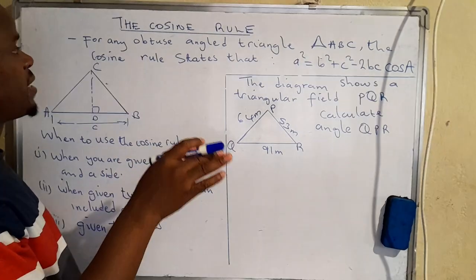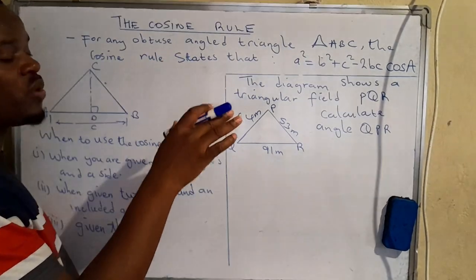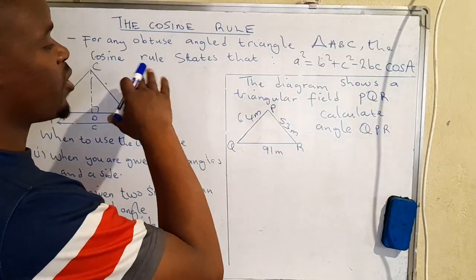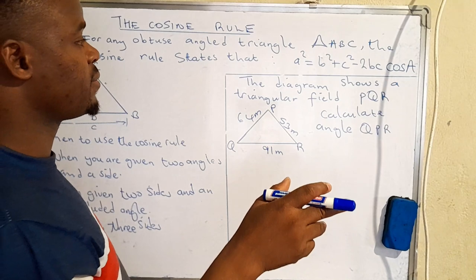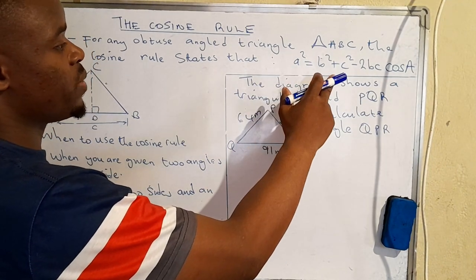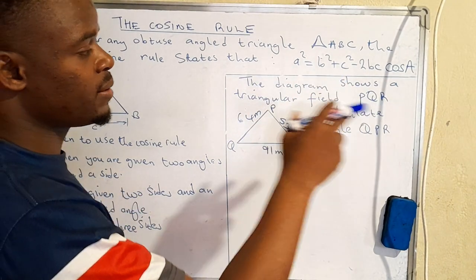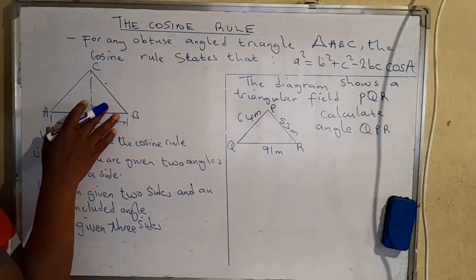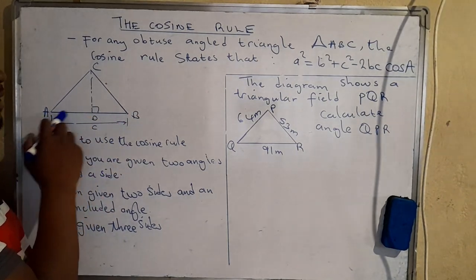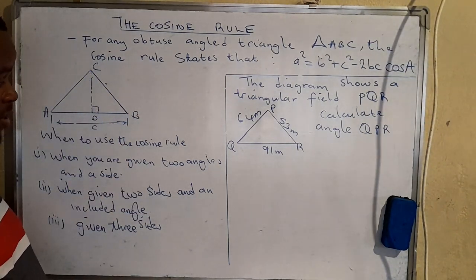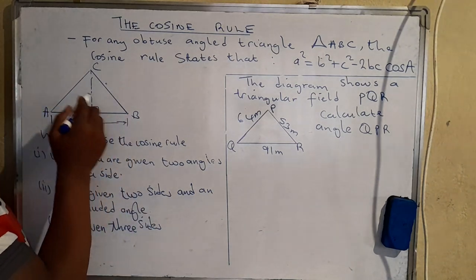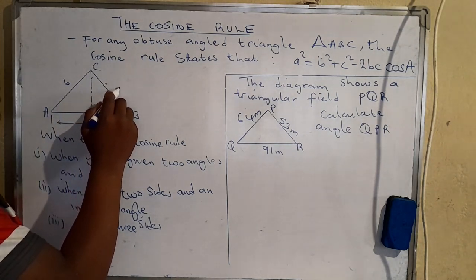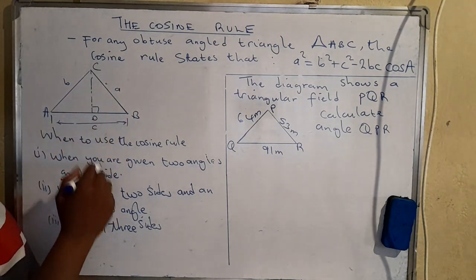The cosine rule states that for any obtuse angle triangle which may have the vertices A, B, C, the cosine rule states that a squared is equal to b squared plus c squared minus 2bc cos A. We look at the triangle with vertices A, B, C: the side opposite vertex B is called side b, the one opposite vertex A is side a, and this one is side c.